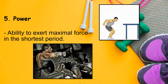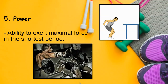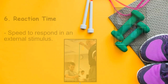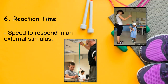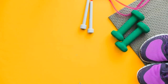The fifth one is power — the ability to exert maximal force in the shortest period. It is the combination of speed and strength. The last one under skill-related fitness is reaction time — the ability to respond to an external stimulus.